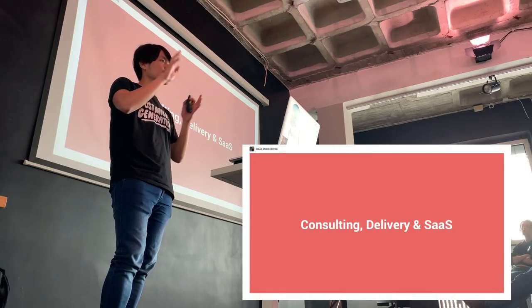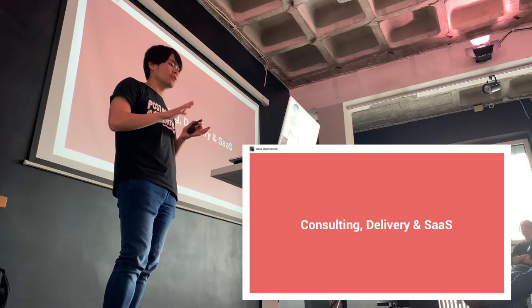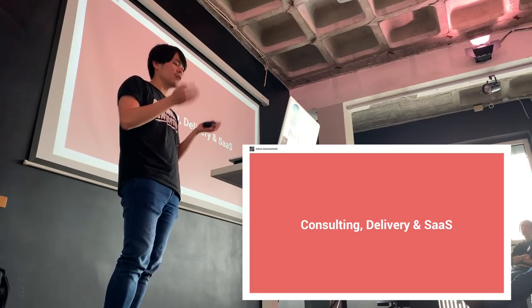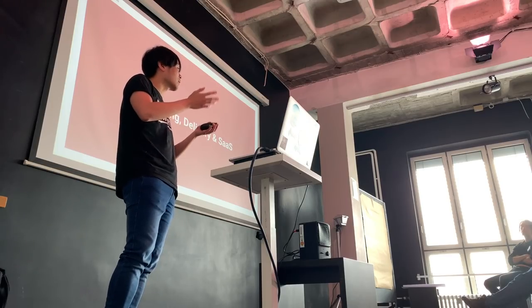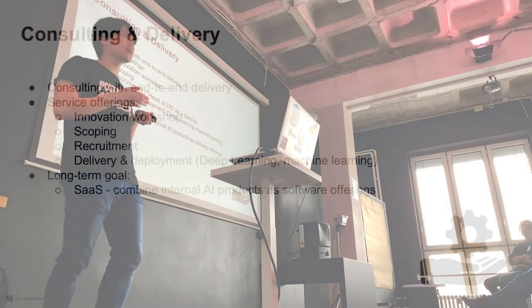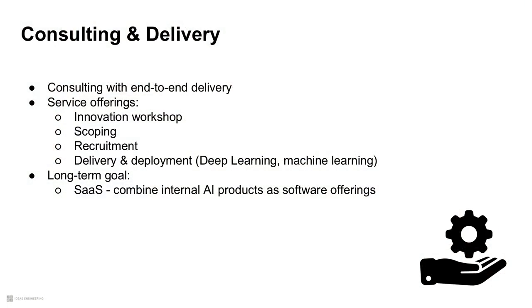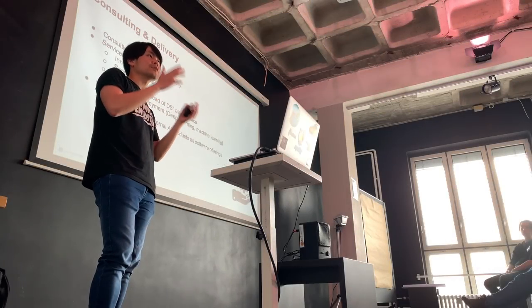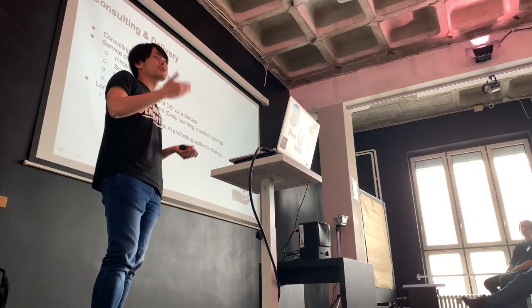On the consulting and delivery side — I won't go into too much detail but want to give you a first idea of how things could work. In terms of consulting, we want to do end-to-end delivery — not just come in and present five or six use cases we think are good, but actually have our knowledge implemented in your company and your unit. There are many different offerings: for example, some companies are at the beginning of their AI journey, so maybe we need to talk to the C-level about what use cases are possible.